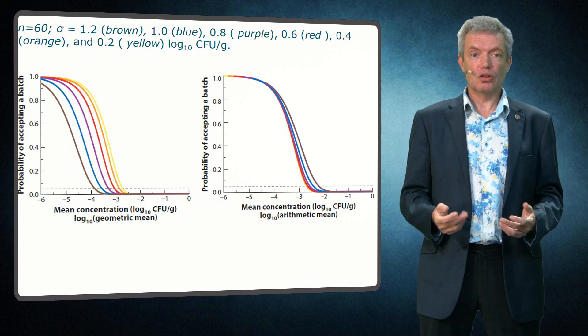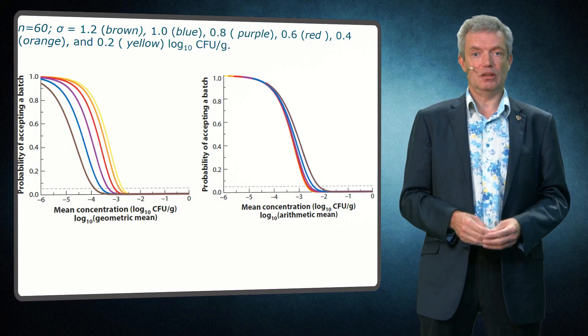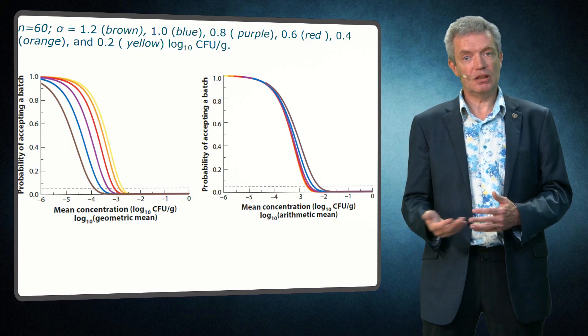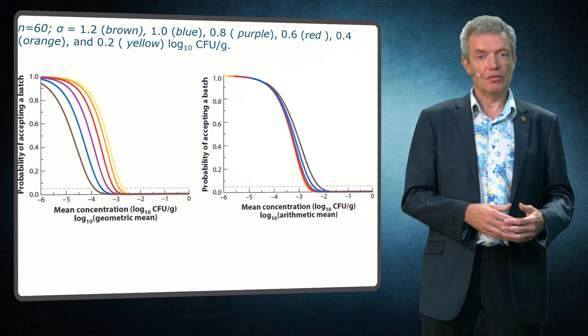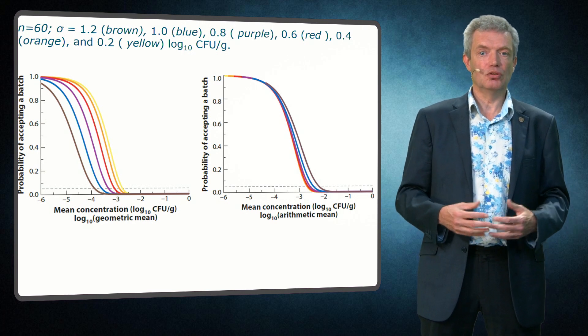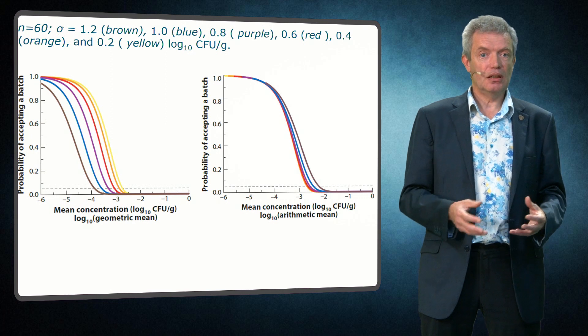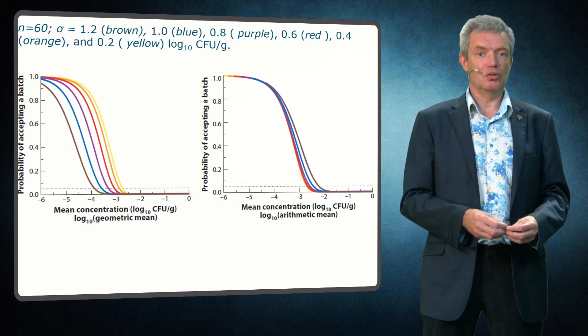And that is very good news, because often we do not know this standard deviation. Often a value of 0.8 is used and for well-mixed food products 0.4 and for very heterogeneous material we choose 1.2. But they are all estimates. But we see here that it does not matter that much for the OC curve.